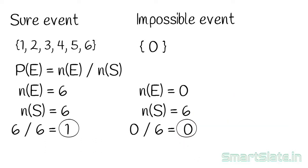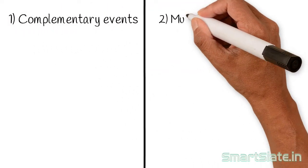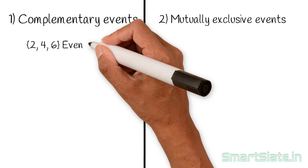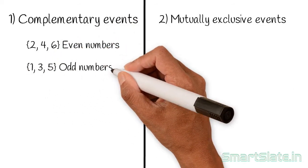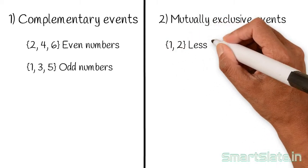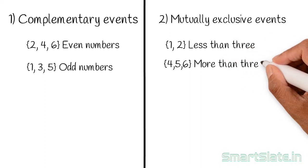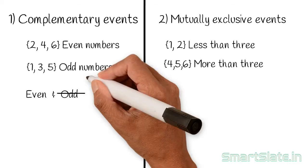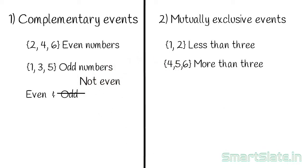We are left with two more types of events: complementary events and mutually exclusive events. Consider two sets of events: getting even numbers and getting odd numbers — these are complementary events. Getting even and getting odd is the same as getting even and getting not-even. If a number is not even, it has to be odd, and if it is not odd, it has to be even. There is no middle event, so these are complementary events.